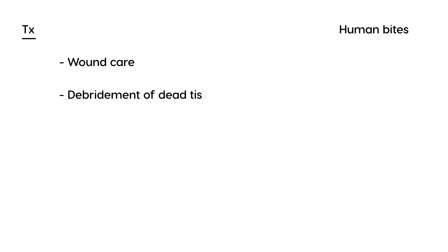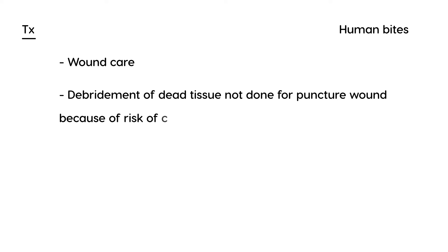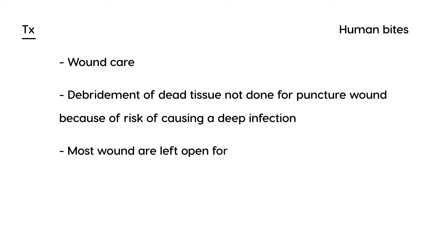In terms of treatment of a human bite, wound care is very important and the dead tissue is debrided. An important point to remember is this is not done for certain types of wounds — one example is a puncture wound. The reason is because there is a risk of causing a deep infection if you were to debride a puncture wound. Most wounds are actually left open for human bites and you don't need to suture them.